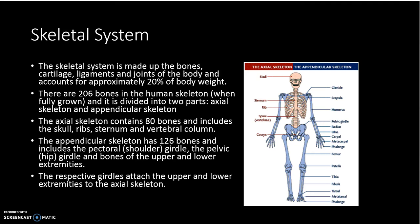For the vertebrae, there are many — 30-odd in fact — but we only need to know them in their five sections: cervical, thoracic, lumbar, sacrum, and coccyx. Our fingers and toes each have individual names but we just need to know them collectively as phalanges. The appendicular skeleton contains 126 bones. The shoulder girdles and pelvic girdles are responsible for joining the appendicular skeleton to the axial skeleton, but those girdles are considered part of the appendicular skeleton. In the diagram, the appendicular skeleton is highlighted in blue and the axial skeleton in pink.